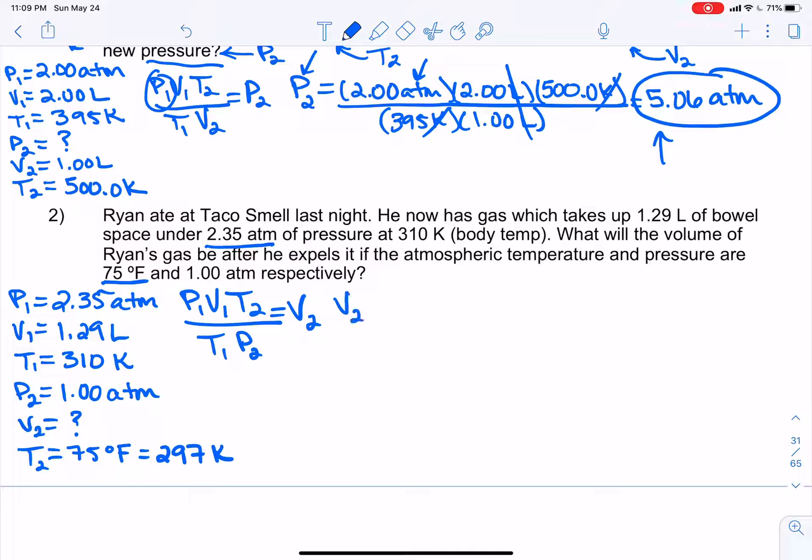Okay, so plug and chug time. What we've got is that V2 is equal to P1. So we've got 2.35 atm multiplied by V1, which is 1.29 liters, multiplied by what? 297 Kelvin. It's T2, not T1. And again, your brain's going to want to do that. That's totally normal. So we have 297 Kelvin here. And we divide that by T1, which is 310 Kelvin. And we multiply that by P2, which is 1 atm.